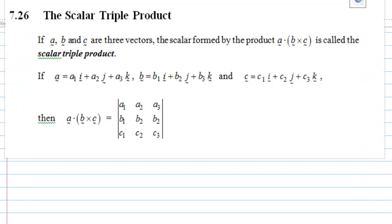This video will introduce the scalar triple product. What is this scalar triple product? This is a mixture of scalar product and vector product, or the mixture of dot product and cross product. In short, if a, b, c are three vectors, the scalar formed by the product a dot b cross c is called the scalar triple product.